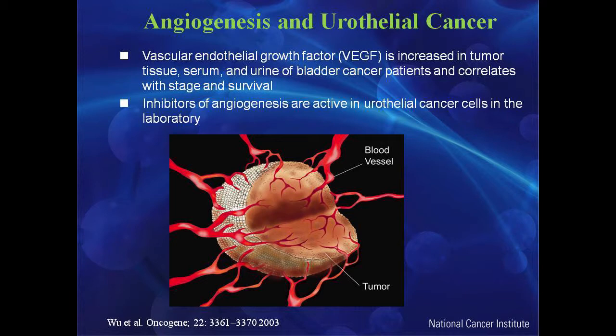One exciting area in bladder cancer is anti-angiogenic agents — drugs that target the blood supply of the tumor. Vascular endothelial growth factor (VEGF) is increased in the tissue, blood, and urine of patients with bladder cancer, providing a rationale for it as a treatment target. Anti-angiogenic agents work in other solid tumors such as kidney cancer and in combination with chemotherapy in breast, colon, lung, and many more cancers.